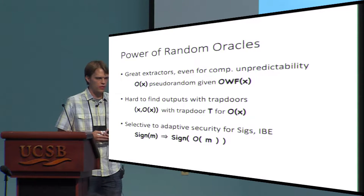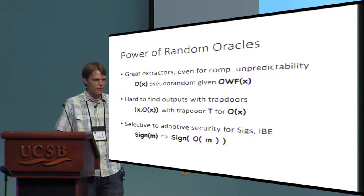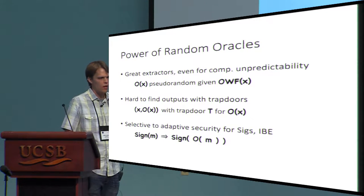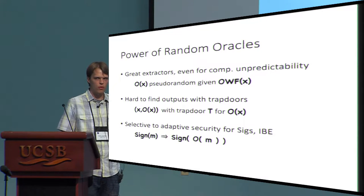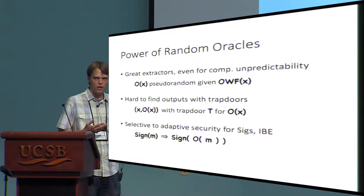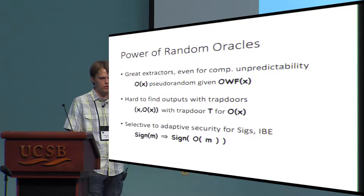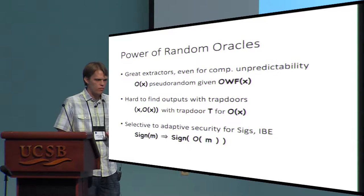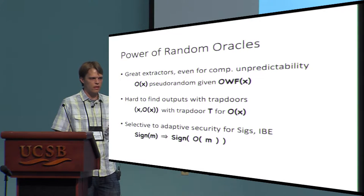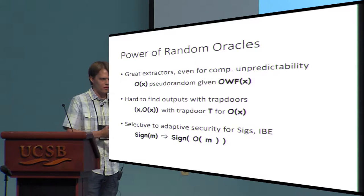Random oracles are actually very interesting objects. They are great extractors even for computational unpredictability. For example, if I have some unknown input and give you leakage about it — maybe a one-way function on the input — and also hash the input using the random oracle, the output of the random oracle is pseudorandom. It's also hard to find outputs with known trapdoors, which is useful for generating common reference strings where everyone believes no one knows a trapdoor. Another easy application is converting selective to adaptive security for primitives like signatures and identity-based encryption.